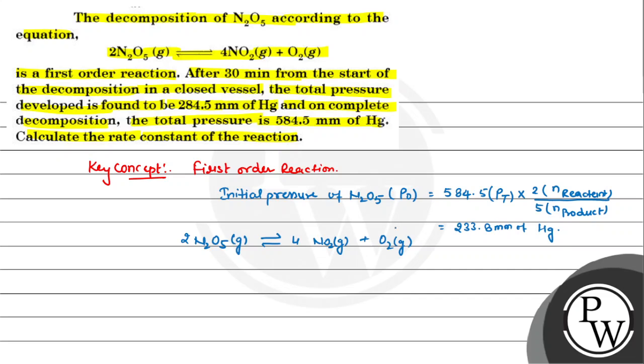If initially we talk about P0, which is 233.8 mm of Hg. At t equals zero time, it's also 0. At t equals 30 minutes, some x amount has reacted.